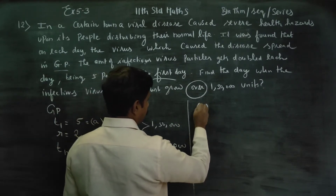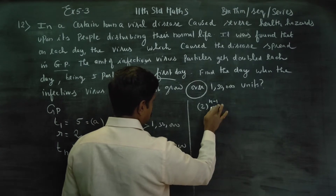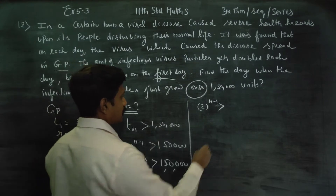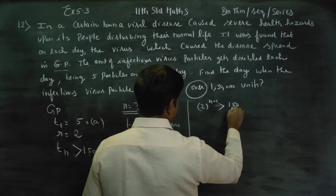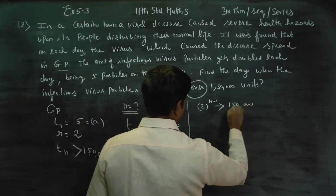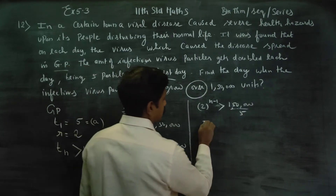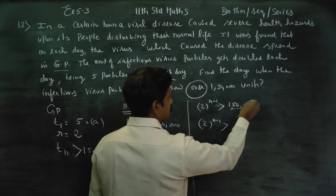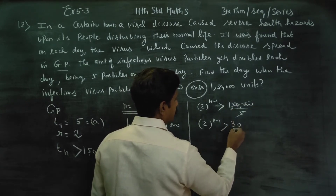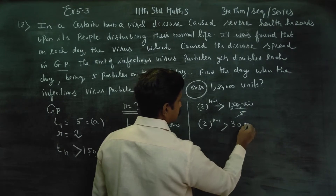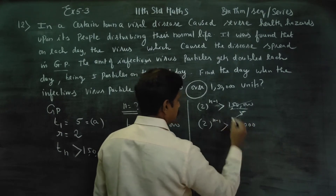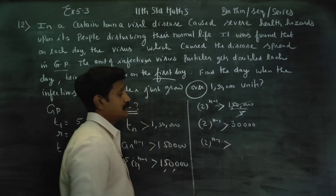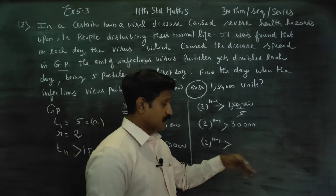Then, 2^(n-1) is greater than 1,50,000 divided by 5, which gives 2^(n-1) greater than 30,000. So if you want to find the value of n-1, you need to find which power of 2 first exceeds 30,000.